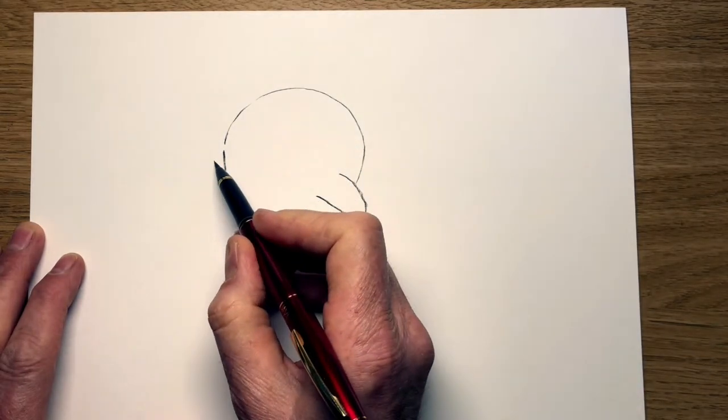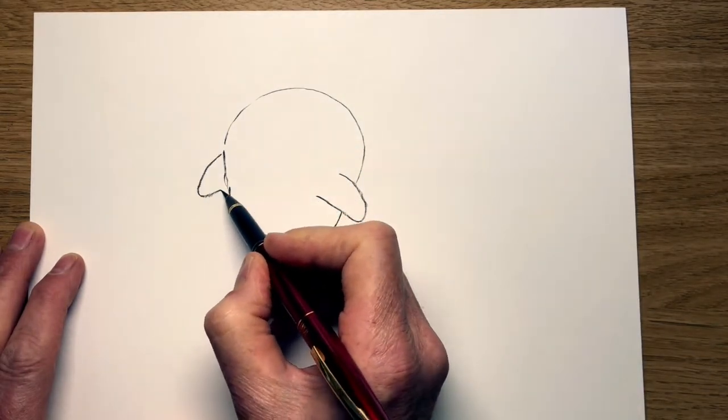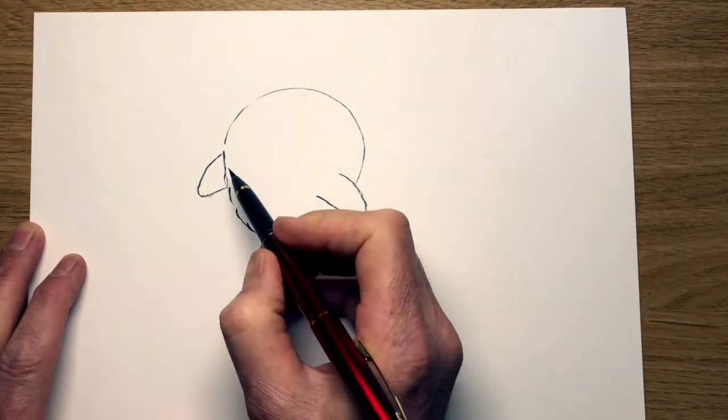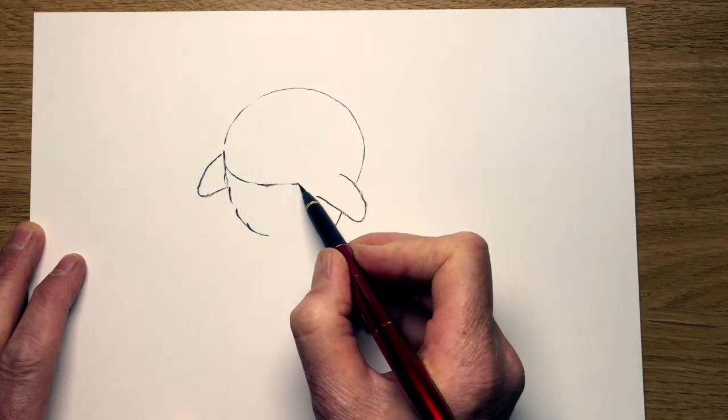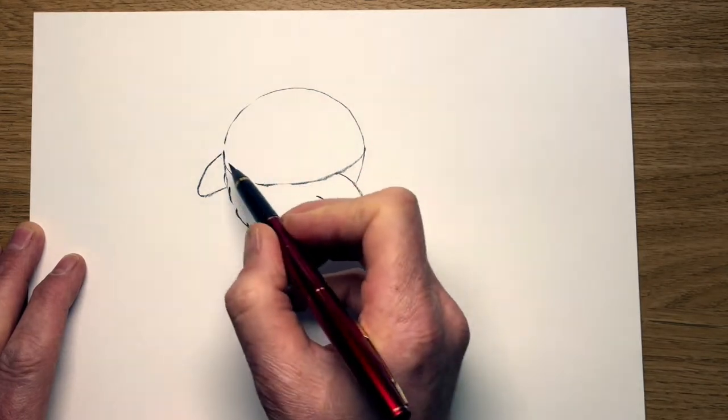And then another wing coming off here. It's a triangular shape. Okay now for this particular sort of penguin they've got markings, a circle at the top of the head.